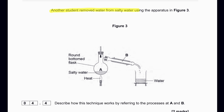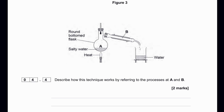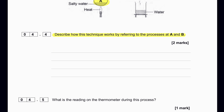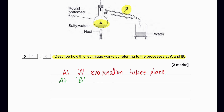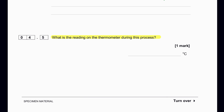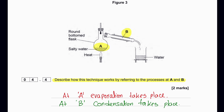The student removed water from the salty water using a simple distillation apparatus. The salty water is heated at point A and steam rises, which does not contain any salt. The steam then condenses and we collect pure water. At A, the process is evaporation; at B, it is condensation. The reading on the thermometer should be close to 100°C, because that is the boiling point of water.